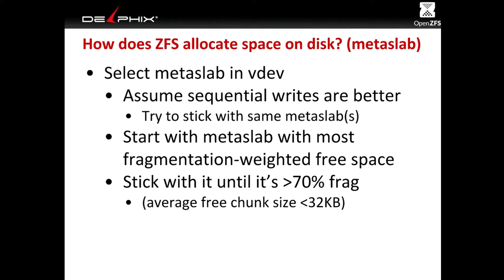Once we've figured out which device to write to, we need to figure out which metaslab within that device. Each device is divided into about 200 regions of equal size — we call those regions metaslabs. It's at the metaslab level that we track what is actually free and allocated. The underlying assumption here is that sequential writes are better than random writes, and this is by and large true.